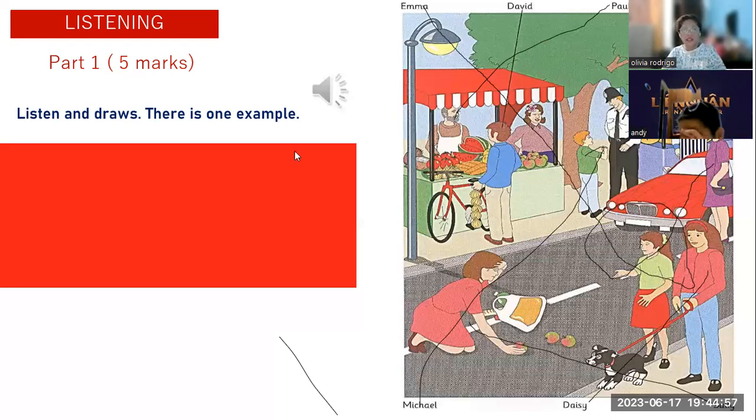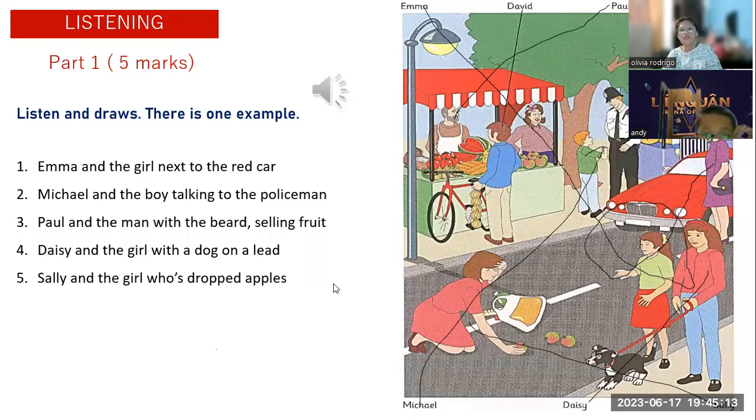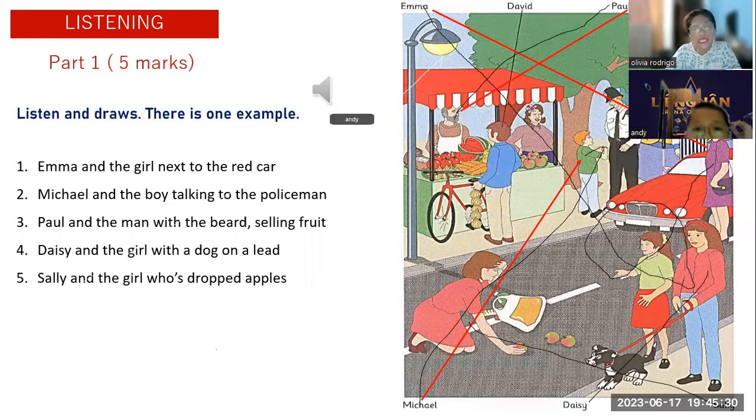Okay, let us check here. So Emma is the girl next to the red car. That's Emma. Michael is the boy talking to the policeman. That's right. Paul is the man with the beard selling fruit. Very good. Daisy is the girl with the dog. This is Daisy. And Sally is the girl who dropped apples. This is Sally. Very good.